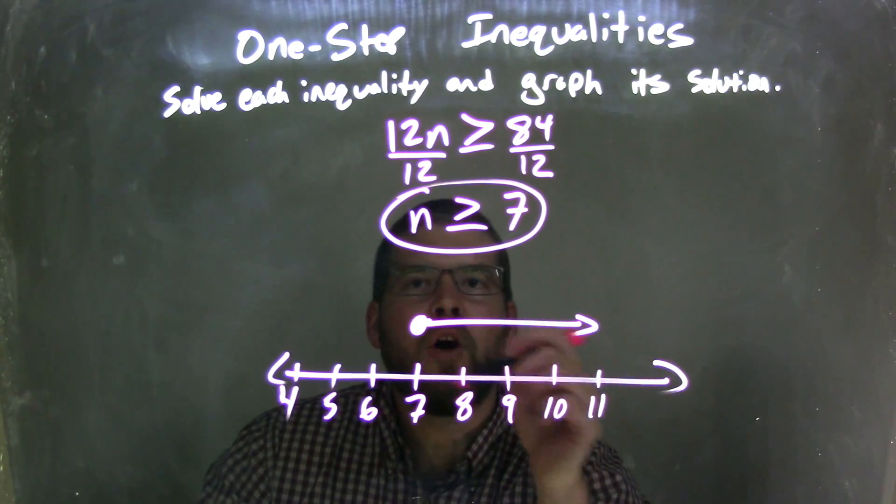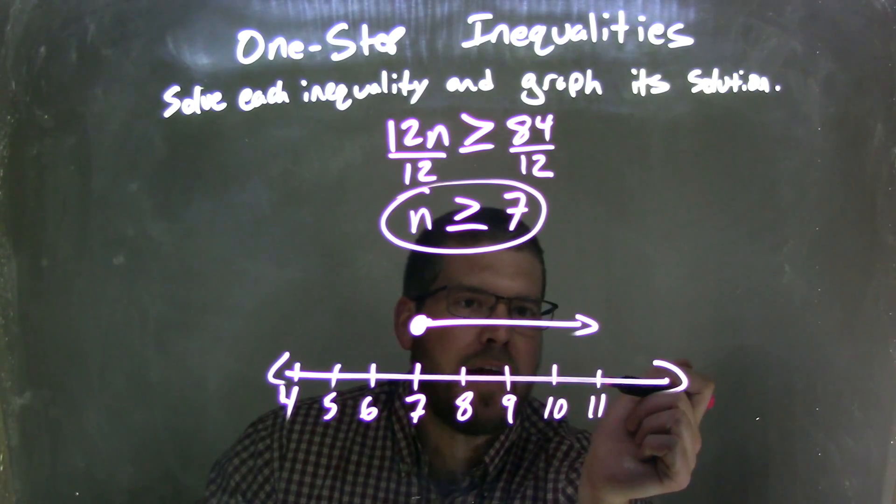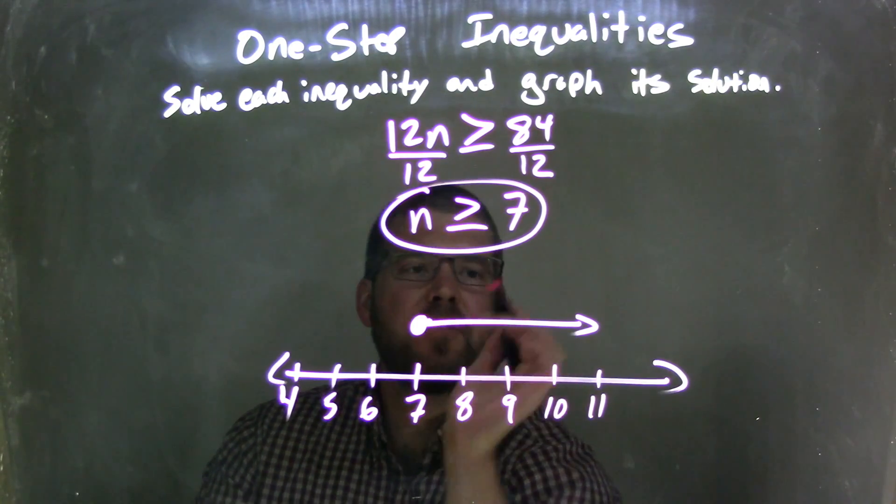And so this graph represents all values that n can be. So let's test it really quickly. Put 11 in. If I put 11 in for n, is 11 greater than or equal to 7? Yes. True statement. That's where my shading is.